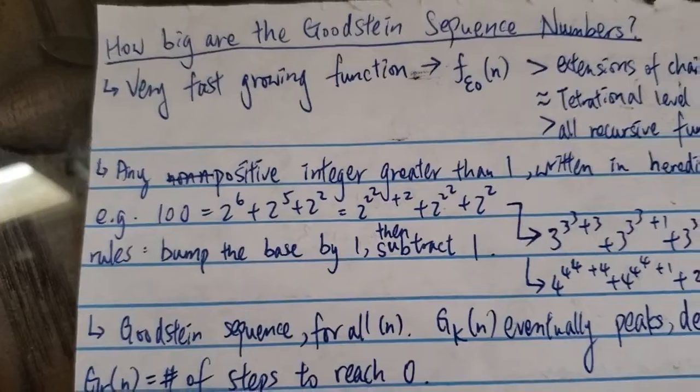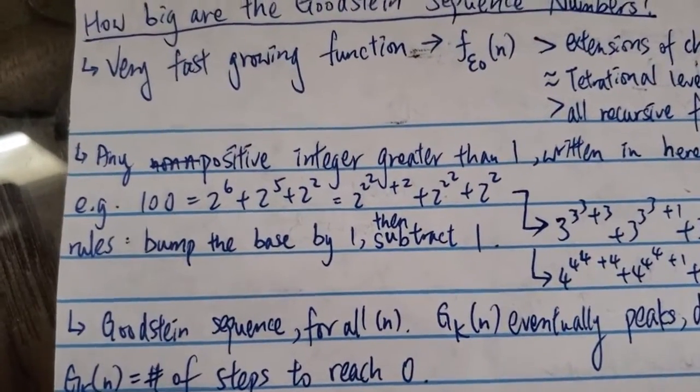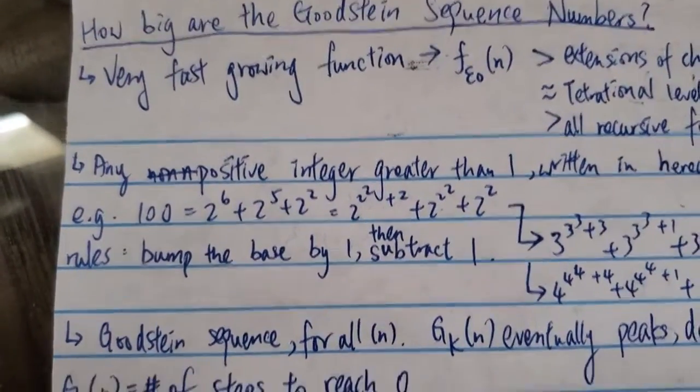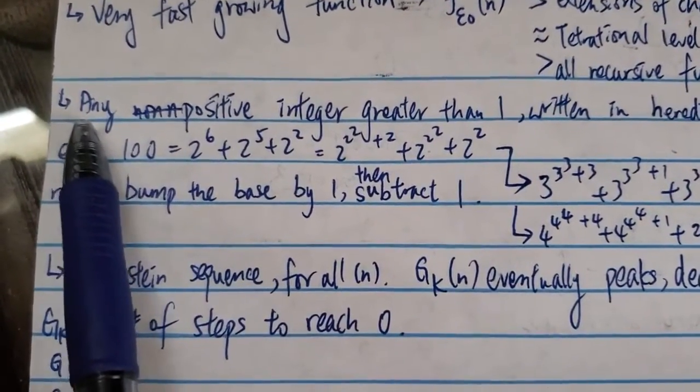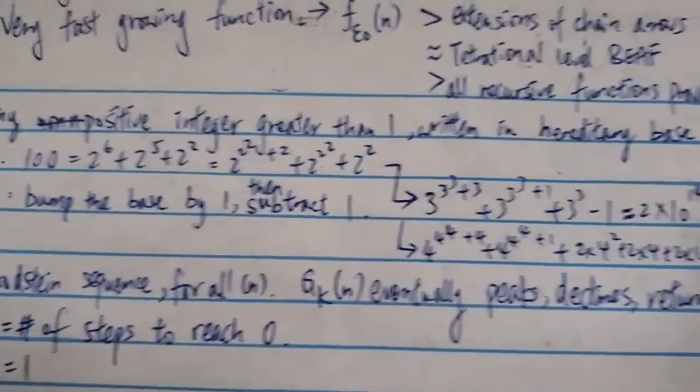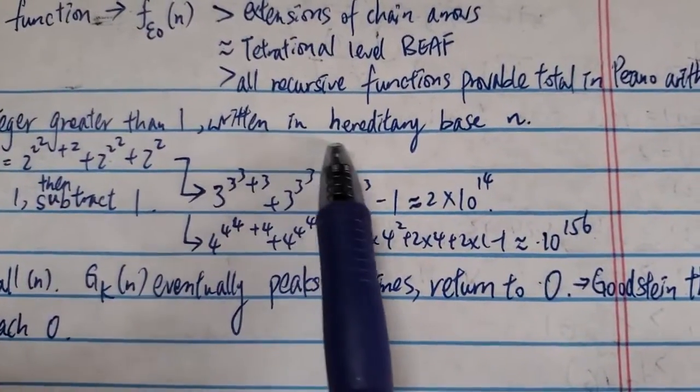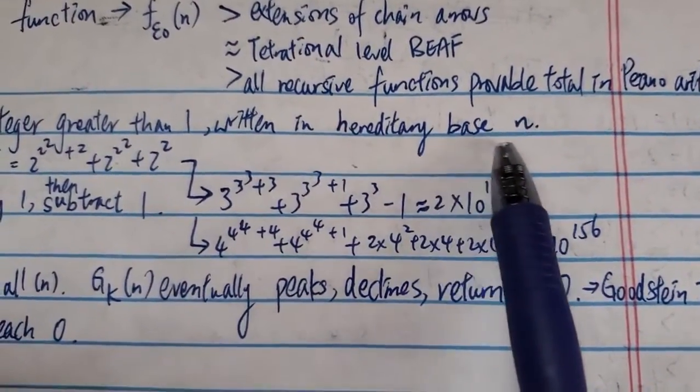So first of all, a very quick explanation of what is the Goodstein sequence. Basically what it's about is that any positive integer greater than 1, you can write it in hereditary base n.